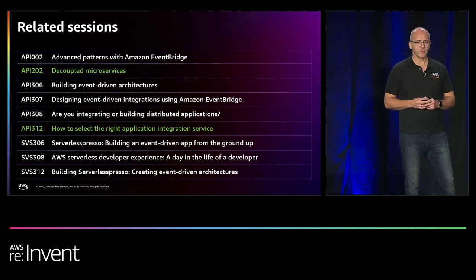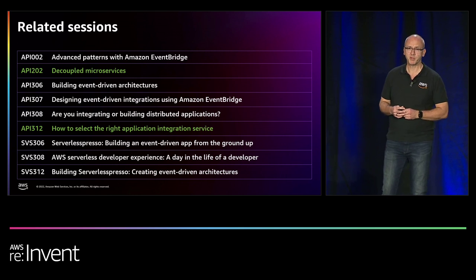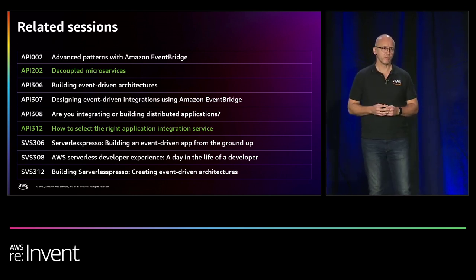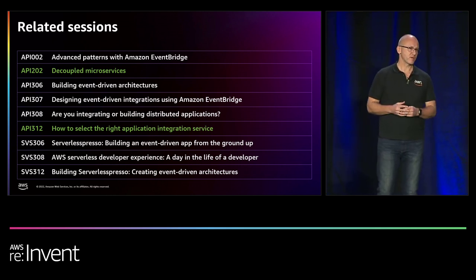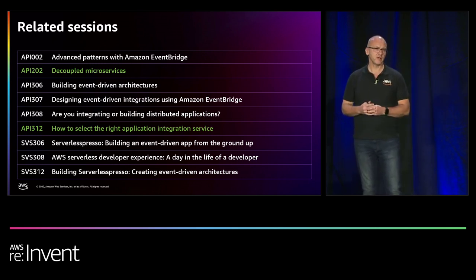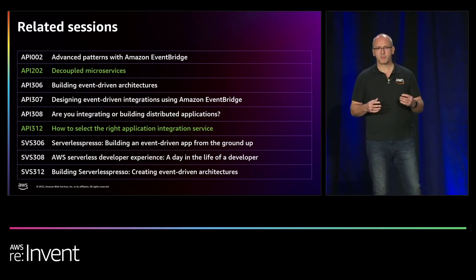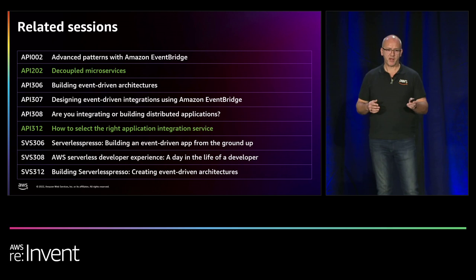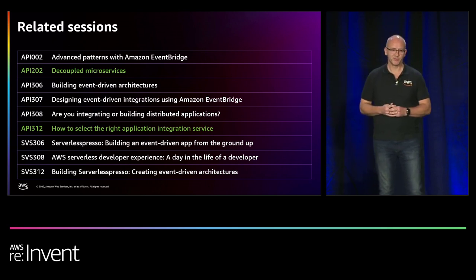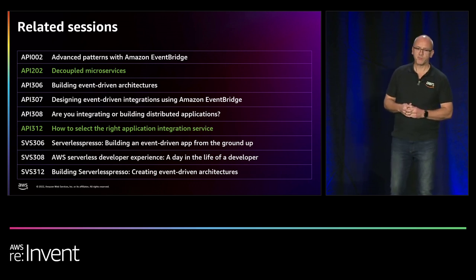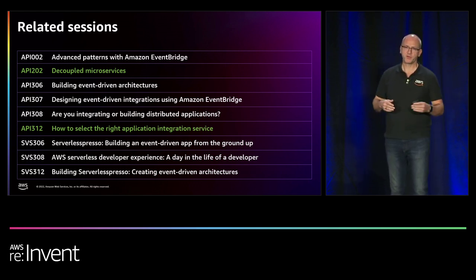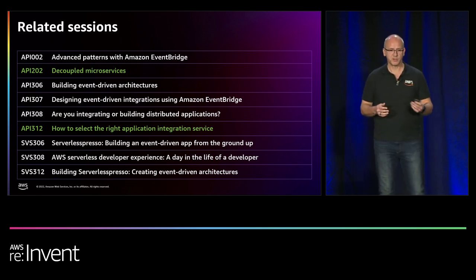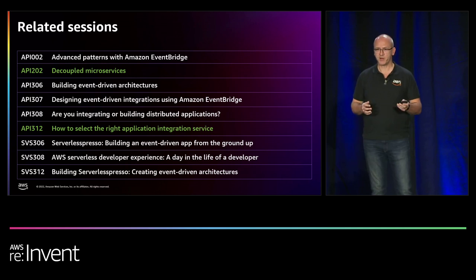I also want to share what we did in API 202, Decoupled Microservices — a hands-on workshop with labs implementing the example use cases I have tonight. You can ask your AWS solutions architect to run these labs with you. API 312 was a talk this afternoon with my colleague Christian Müller, where we discussed a decision tree for selecting the best integration service for your scenario.